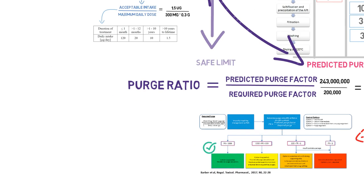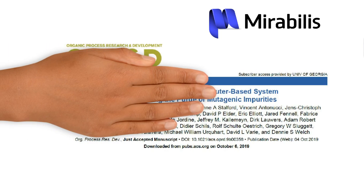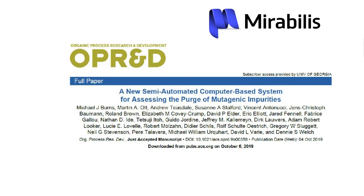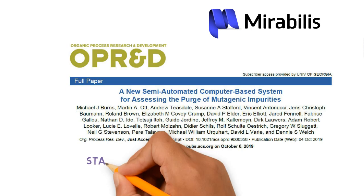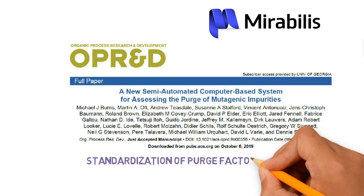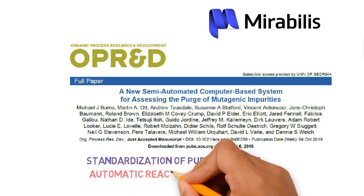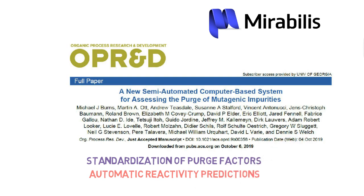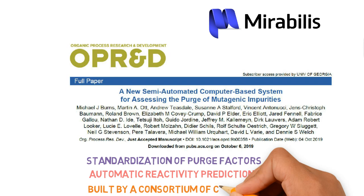However, an in-silico tool has already been developed to help in this prediction. Mirabilis is a software described in this paper by Michael Burns and colleagues, which helps the industry to standardize their calculations, besides giving automatic reactivity factors for a series of reactions which are within the knowledge base, built by a consortium of experienced chemists.